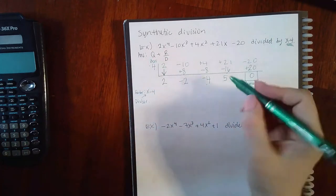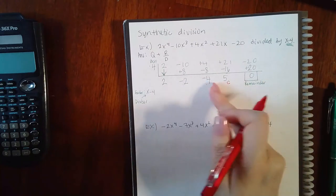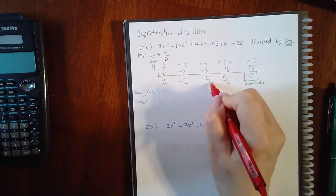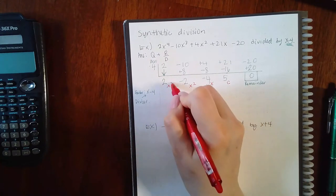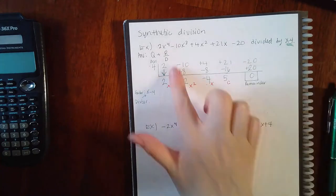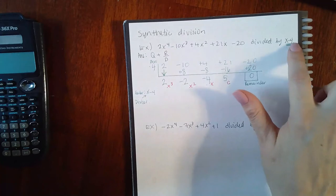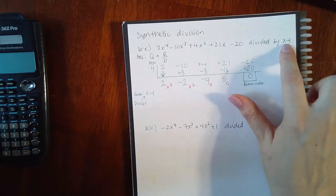The rest of it is going to give me the quotient. The last number is always your constant, and then it increases in degree until you get to the end. After constant is x, before x is x squared, and before x squared is x cubed. This makes sense. You're taking a polynomial x to the fourth and dividing it by a binomial x. What happens when you take x to the fourth divided by x? You end up with x cubed.